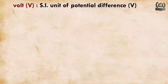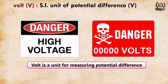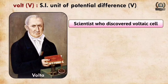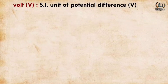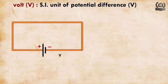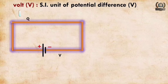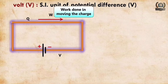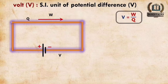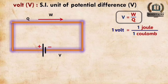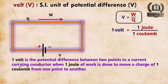Next is volt — it is the SI unit of potential difference V. The scientist who discovered the voltaic cell is Volta. In a circuit where a cell is connected with a potential difference V, charge Q flows from the positive to the negative terminal, so work is done in moving the charge. Therefore, potential difference V = work done / charge. The SI units are: volt for potential difference, joule for work done, and Coulomb for charge. So 1 volt = 1 joule per Coulomb. The definition of one volt: it is the potential difference between two points in a current-carrying conductor when one joule of work is done to move a charge of one Coulomb from one point to another.